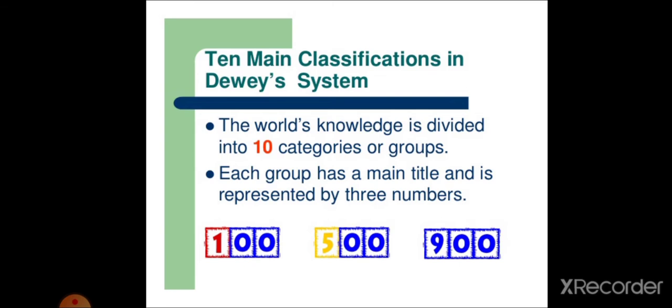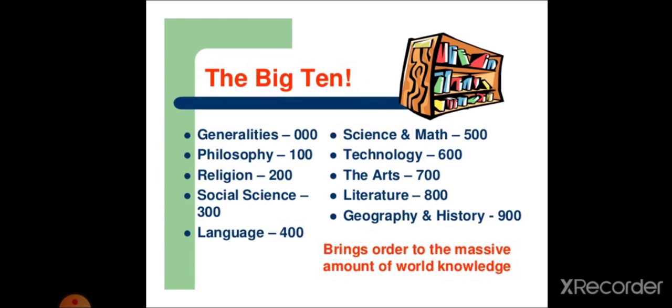The 10 main classifications in Dewey Decimal System. The world's knowledge is divided into 10 categories or groups. Each group has a main title and is represented by three numbers. For example, 100, 500, 900. The Big Ten. As you can see, this brings order to the massive amount of world knowledge.